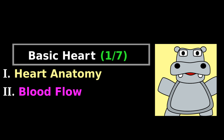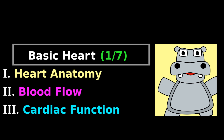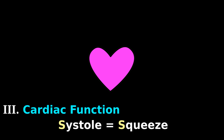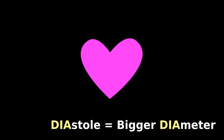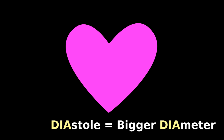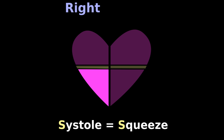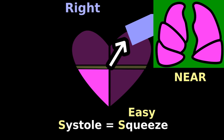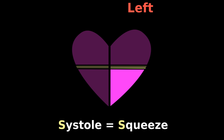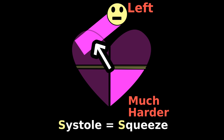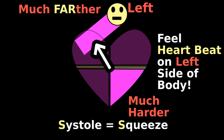Now that we know the anatomy and blood flow, let's look at how the heart functions. Systole is when the heart squeezes hard, and diastole is when the heart is getting a bigger diameter. During systole, the right ventricle only needs to squeeze hard enough to push blood to the nearby lungs, but the left ventricle must squeeze much harder to push blood all the way to the head and body. That is why you feel the heartbeat on the left side — because the left ventricle squeezes much more strongly.